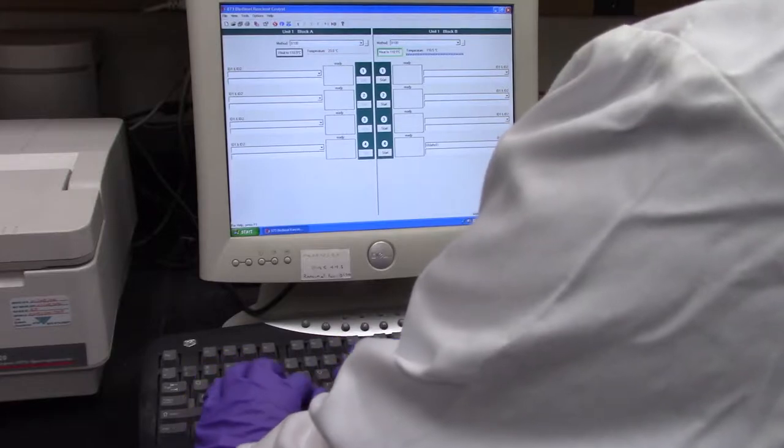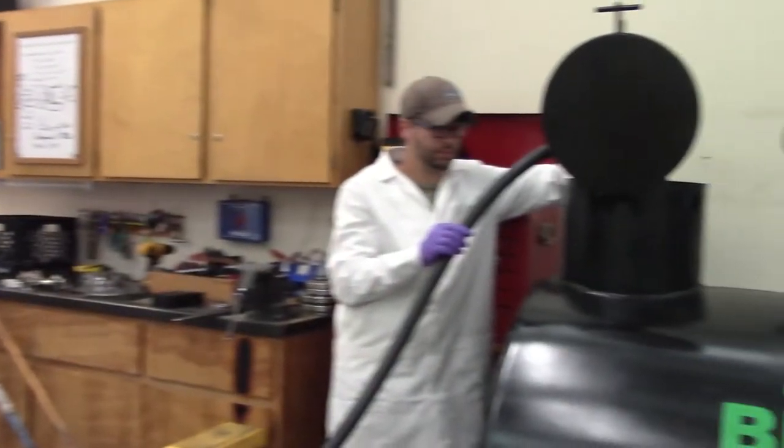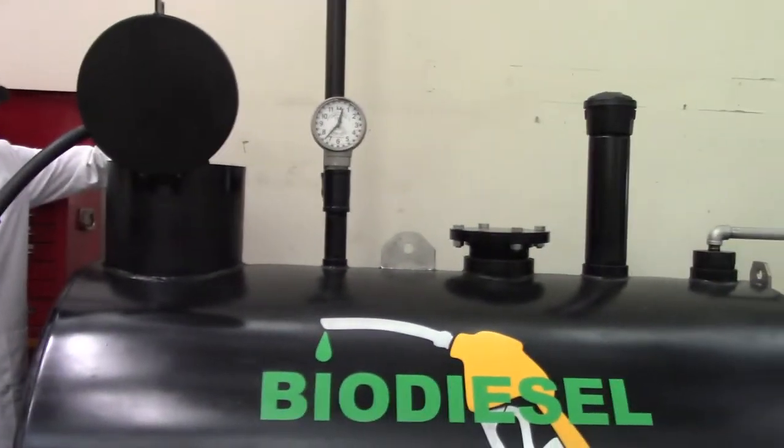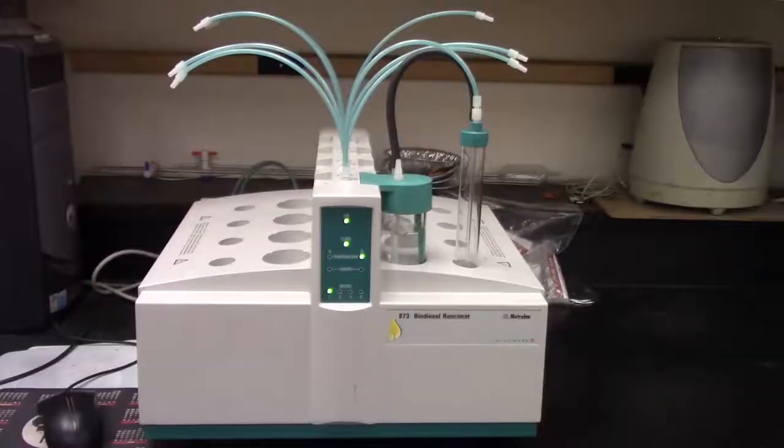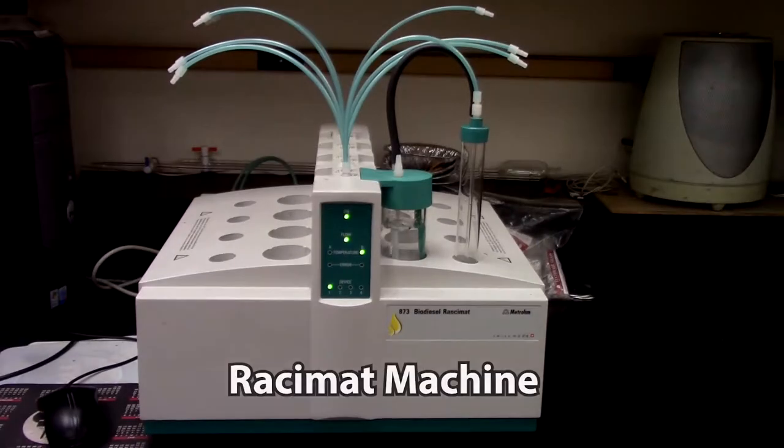Checking the oxidative stability of your biodiesel is important in order to make sure your fuel will last long enough in storage. If the target isn't met, the fuel can break down before being used in your vehicle. To check oxidative stability, we use a Ransomat machine.